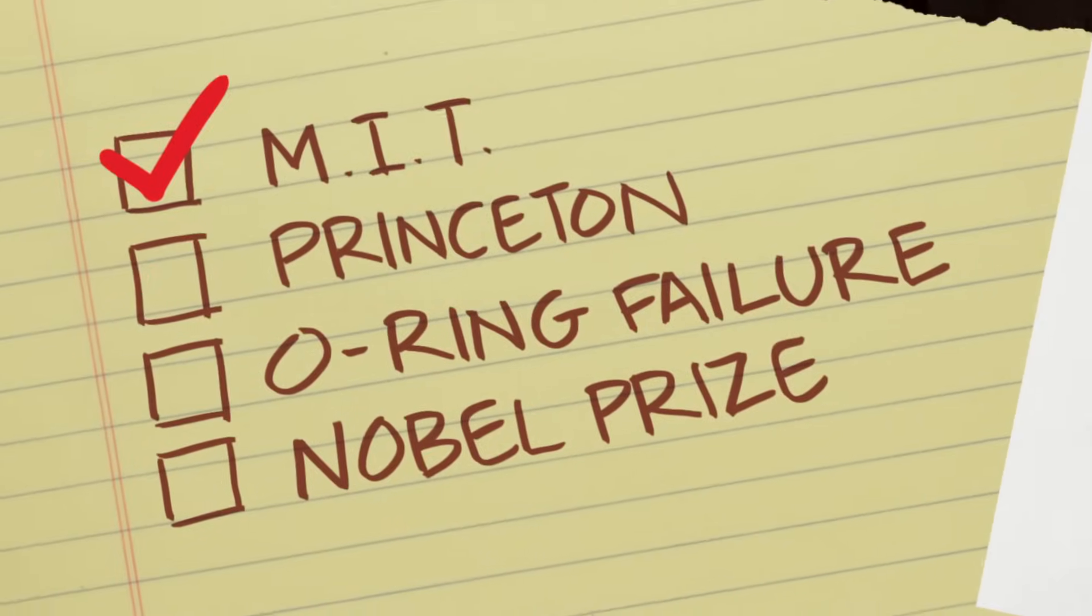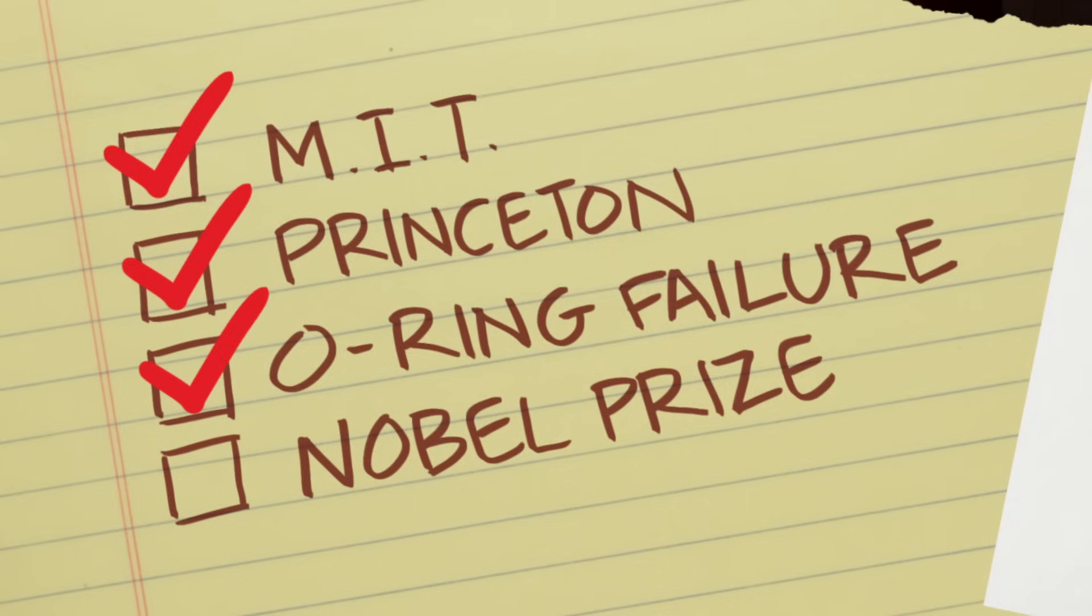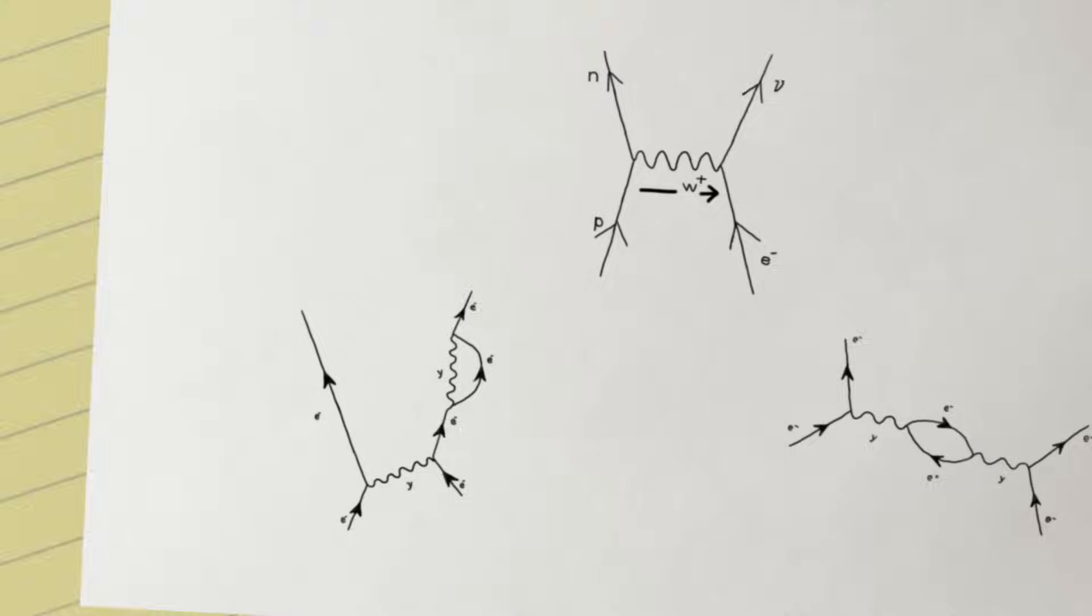Feynman went on to earn degrees at MIT, Princeton. He solved the Challenger disaster. He ended up winning the Nobel Prize in physics for his Feynman diagrams describing the movement of subatomic particles. And he credits that conversation with his father as giving him a sense that the simplest questions could carry you out to the edge of human knowledge, and that's where he wanted to play.